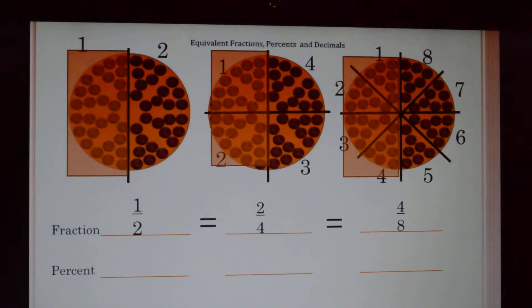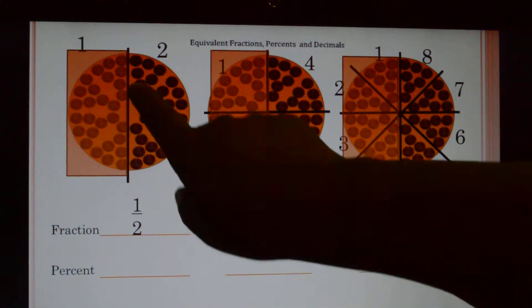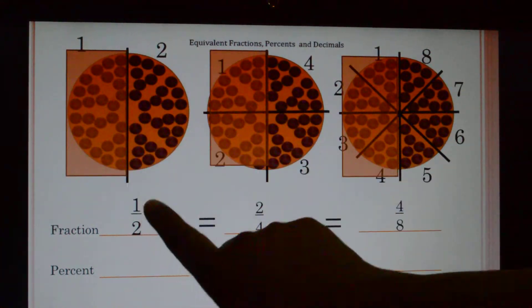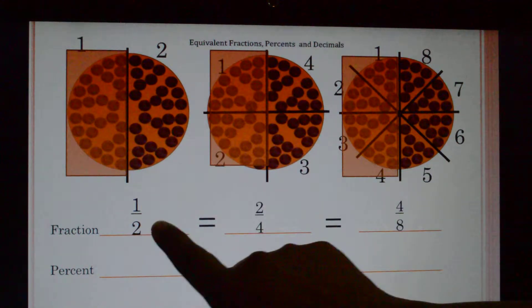Okay, so let's review. You have your first pizza cut into two equal slices, and you ate one of two, so you ate one half.